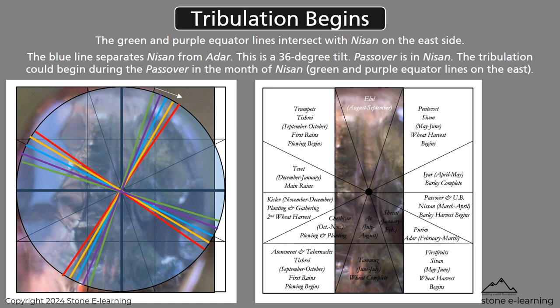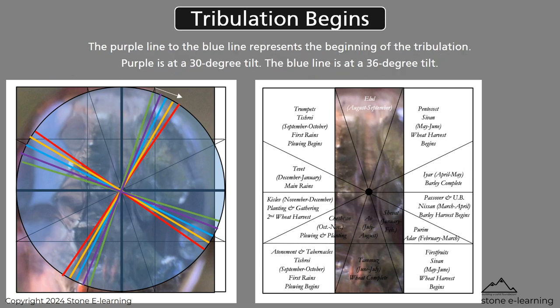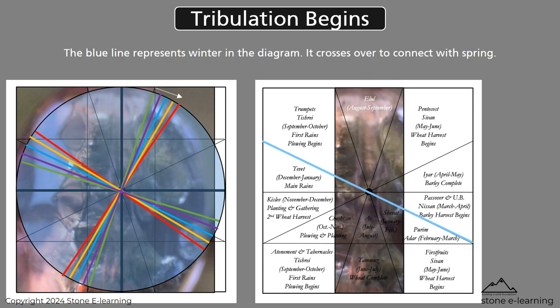The green and purple equator lines intersect with Nissen on the east side. The blue line separates Nissen from Adar — this is a 36-degree tilt. Passover is in Nissen. The tribulation could begin during the Passover in the month of Nissen. The purple line to the blue line represents the beginning of the tribulation — purple is at a 30-degree tilt and the blue line is at a 36-degree tilt. The blue line represents winter in the diagram and crosses over to connect with spring.